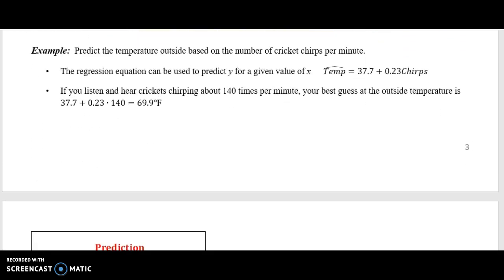Let's take a look at more examples on the chirps and temperature. We're going to predict the temperature outside based on the number of cricket chirps per minute. Let's say you did not have a thermometer in the house, but you did have a cricket stuck in your house. And you used a stopwatch to count the number of chirps in one minute. The regression equation that scientists have come up with is that you can predict your temperature. Temperature with the hat over it means the predicted temperature is the linear equation 37.7 plus 0.23 times the number of chirps.